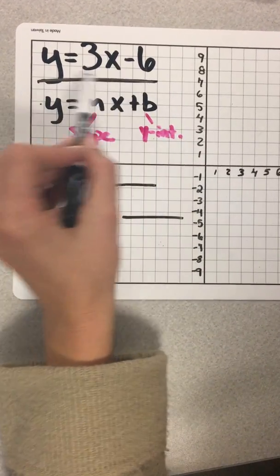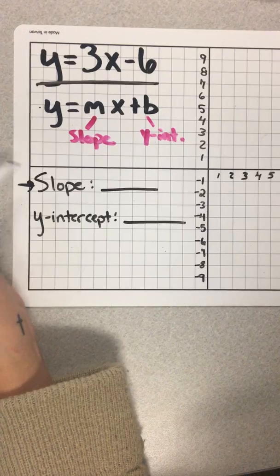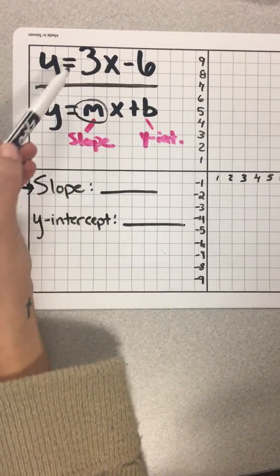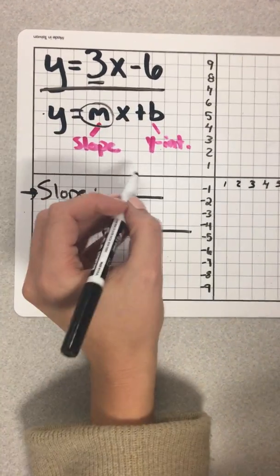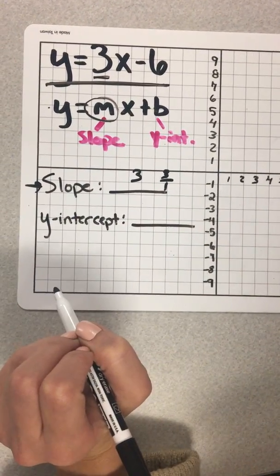So, from this equation right here, y equals 3x minus 6, we're trying to figure out what is your slope. Well, your slope is where the m would be, or 3. It also can be written as 3 over 1, if you want to write it as a fraction.